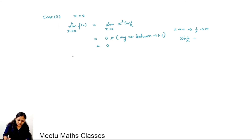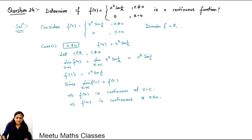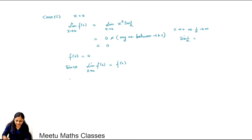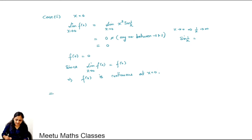The exact value of the function at x equals 0 is defined as 0. Since the limiting value as x tends to 0 equals the exact value f(0) equals 0, the function is continuous at x equals 0. These two cases together imply that f(x) is continuous in its entire domain, so it is a continuous function.